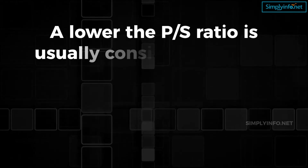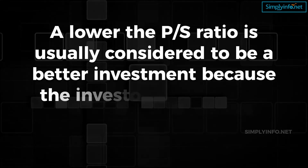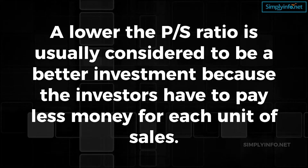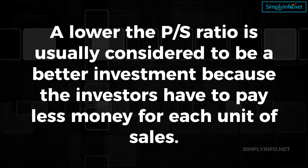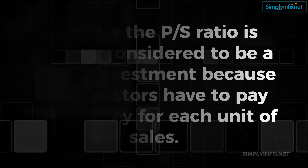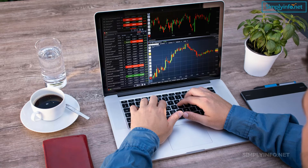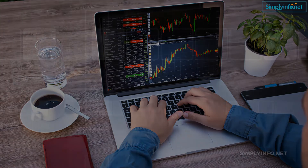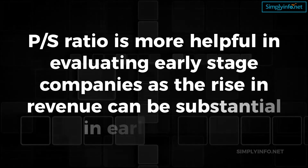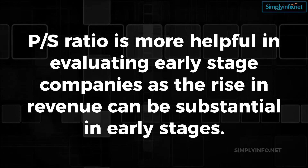This means that for every rupee earned by the company in sales, the market is ready to pay rupees 10 currently. Generally, the lower the ratio the better, as it might indicate undervaluation of a company. A lower PS ratio is usually considered a better investment since investors have to pay less money for each unit of sales. A company's stock price may increase in anticipation of expected revenue growth, leading to a high PS ratio compared to its peers in the same sector. The PS ratio should not be seen in isolation; all other parameters of the stock should be analyzed before buying.